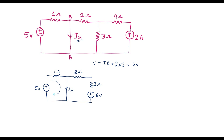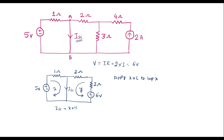I will assume the current through one loop as X and the current through the other loop as Y. Let me apply KVL to loop X. We can observe that ISC is nothing but X plus Y, because ISC is the current flowing from A to B, and both X and Y are also flowing from A to B. So I can write ISC = X + Y.